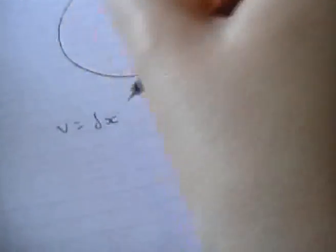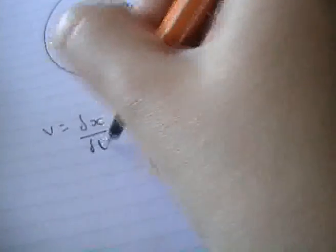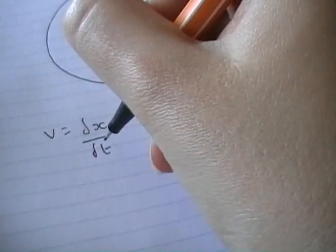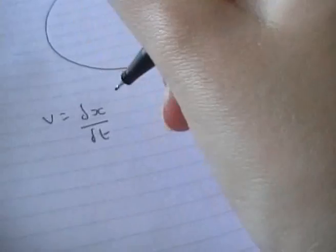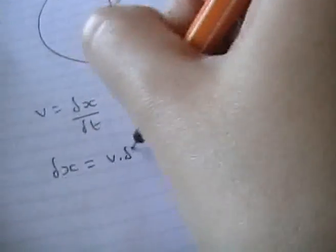Velocity is the change in distance over time. Now let's multiply through by delta t, so make delta x a subject. So delta x equals v delta t.